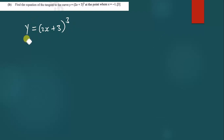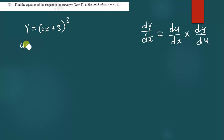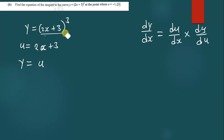Using the chain rule, dy/dx is simply equal to du/dx times dy/du. Chain rule is used to differentiate composite functions, meaning a function within a function. We have two functions: the first is u equal to 2x plus 3, which is the part inside the bracket, and the second is y equal to u to the power 3.